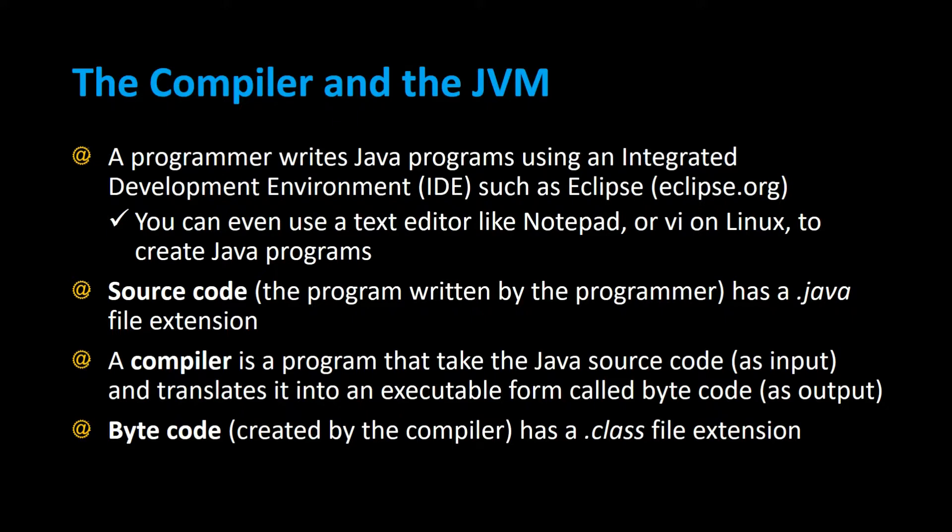Any program with the .java file extension is called source code — this is the program written by the programmer. A compiler is a program that takes the Java source code as input and translates it to an executable form called bytecode, and that is the output of the compiler.